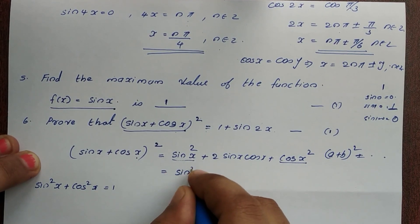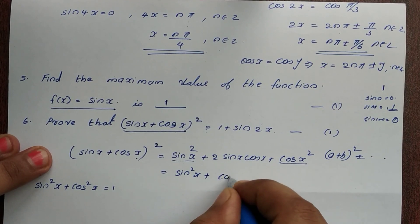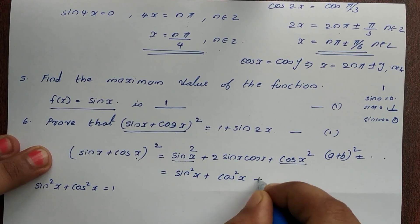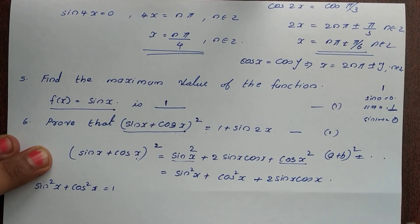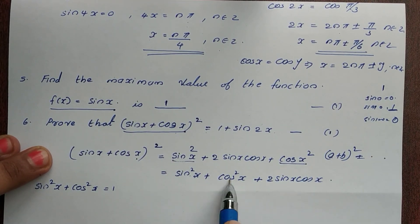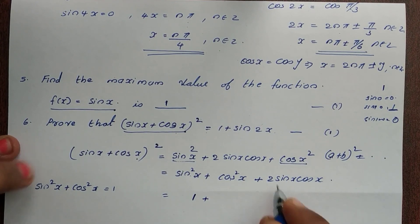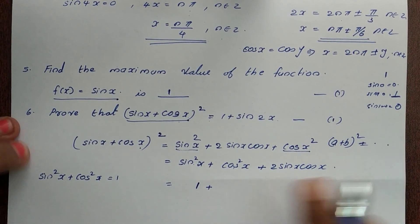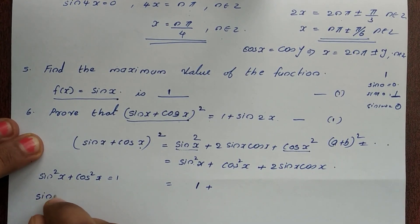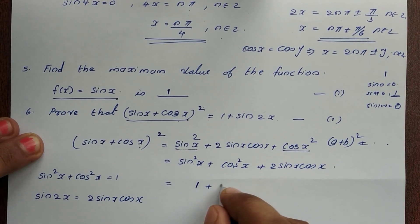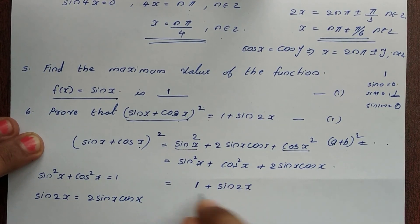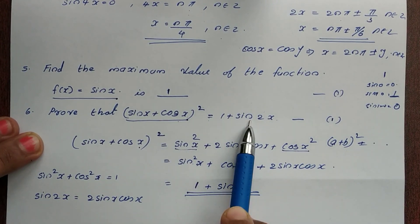So we have sin²x + cos²x + 2sinx·cosx = 1 + 2sinx·cosx. Since 2sinx·cosx = sin2x, this becomes 1 + sin2x. Therefore LHS equals RHS, and the identity (sinx + cosx)² = 1 + sin2x is proved.